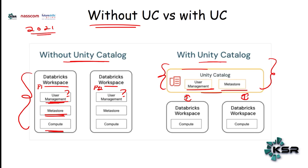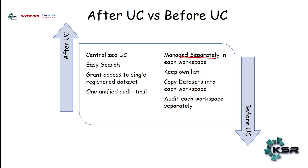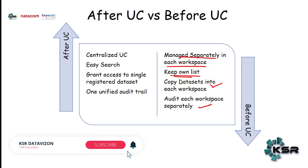Before Unity Catalog, each workspace required separately managed access. You wouldn't even know what tables were available, which tables you'd access, or which you'd use for your projects — you had to create your own list. If one project used certain data and another workspace needed the same data, the only way was to copy the data into different workspaces. Auditing also had to happen separately for every workspace.